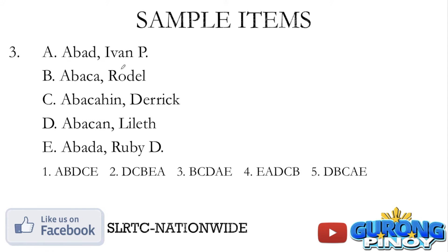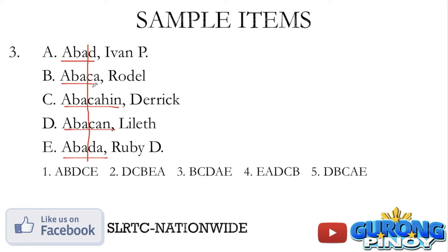Sample problem number 3. You have Abad Ivan P., Abakarudel, Abakahin Derek, Abakanlilef, and Abada Rubidi. Kung inyo pong napapansin, meron tayong last names followed by first names and may middle initial yung iba. We look at the last names first — lahat sila ay may Aba. Then you have three that have Ka: Abakarudel, Abakahin, and Abakan. So letter B should be first because it only has Abakarudel — wala nang ibang letters after that.